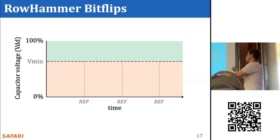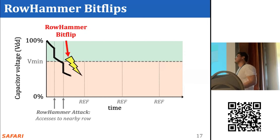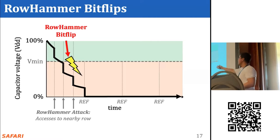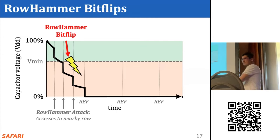Now let's look at the same diagram in the context of a rowhammer attack. If an attacker activates a nearby aggressor row enough times, the charge leakage rate can be accelerated to a point of failure. After this point, no matter how many refresh operations are scheduled, the refresh operation will read the value as zero and restore the incorrect value in the cell.